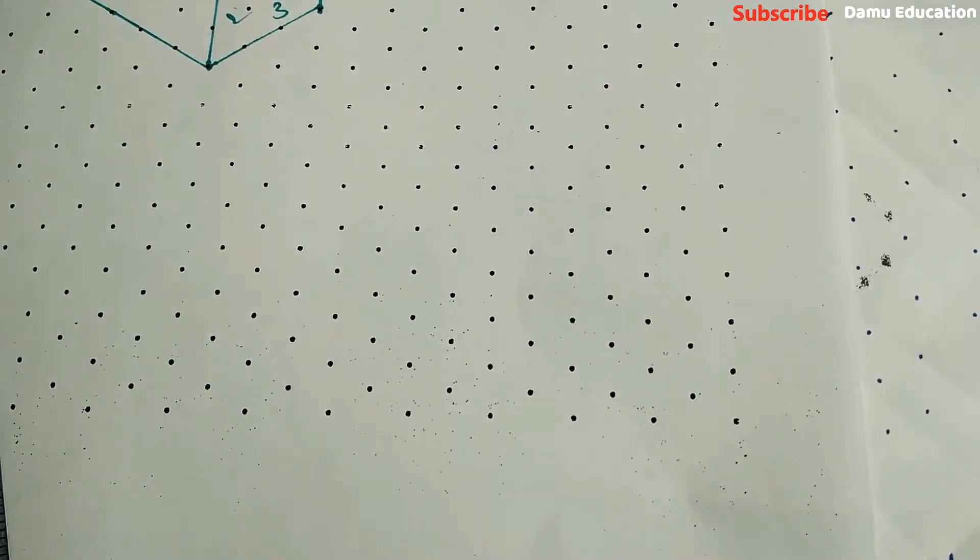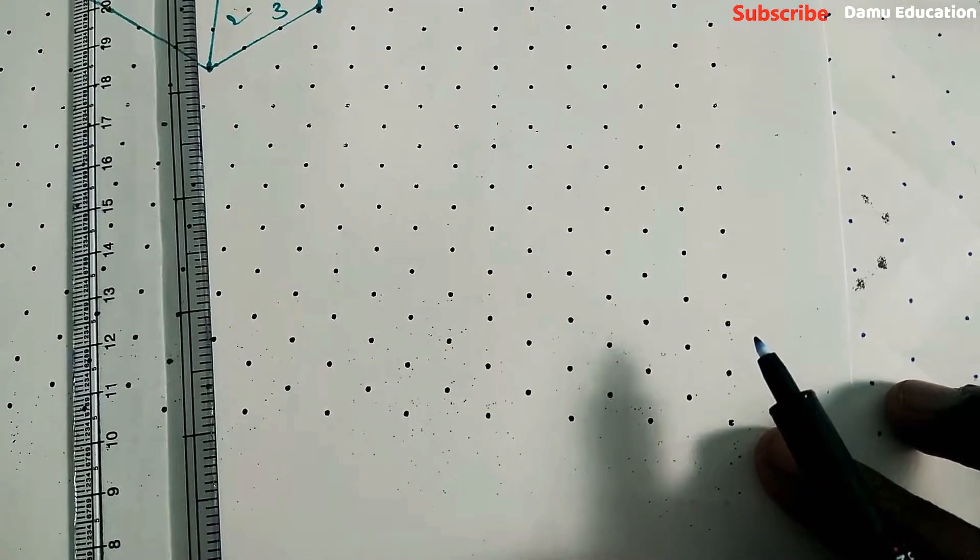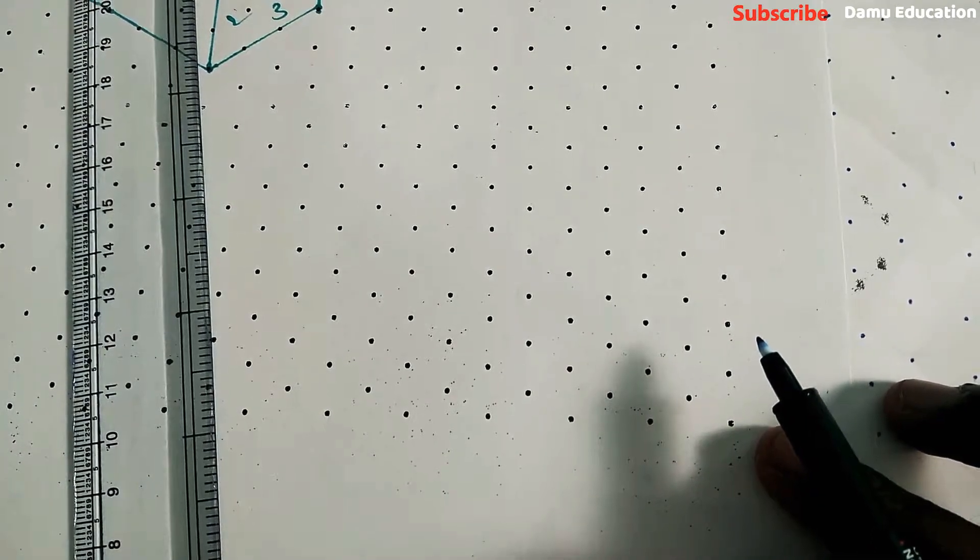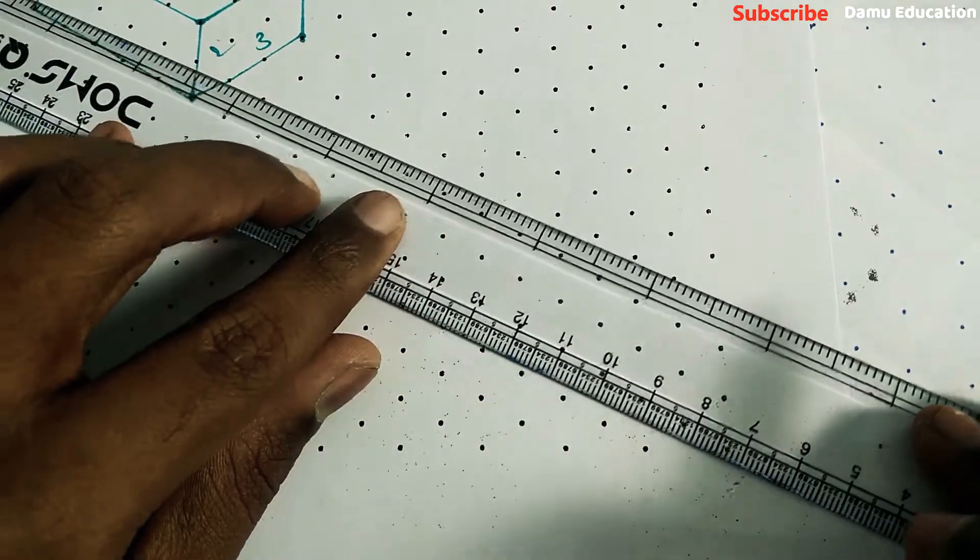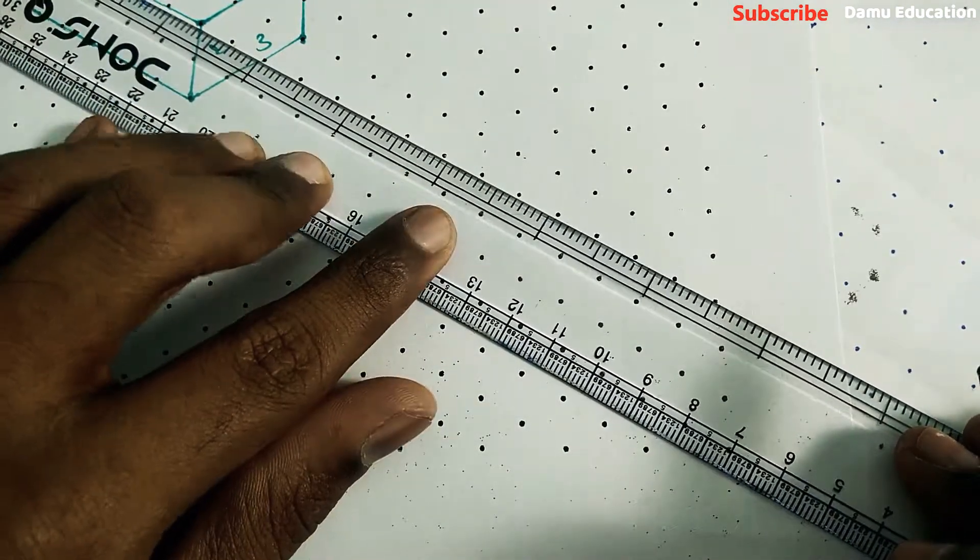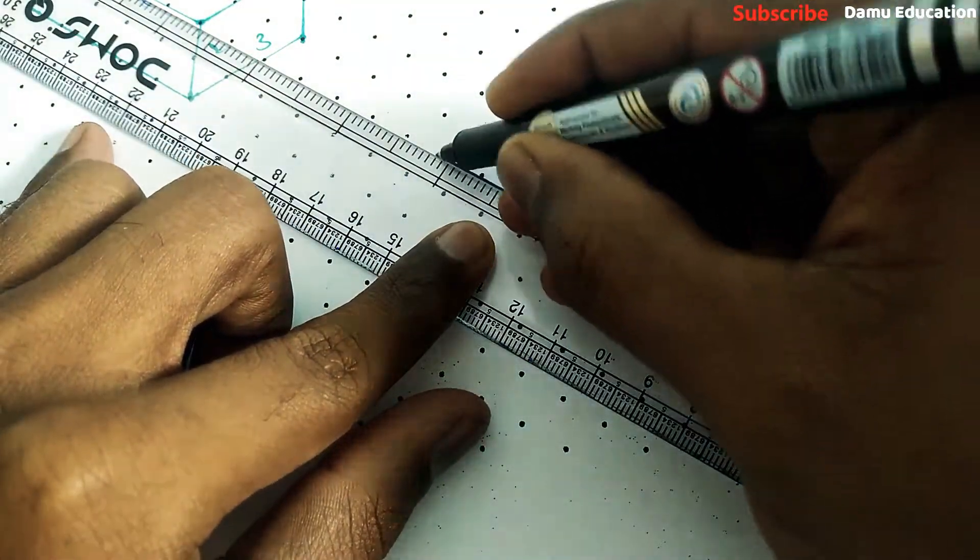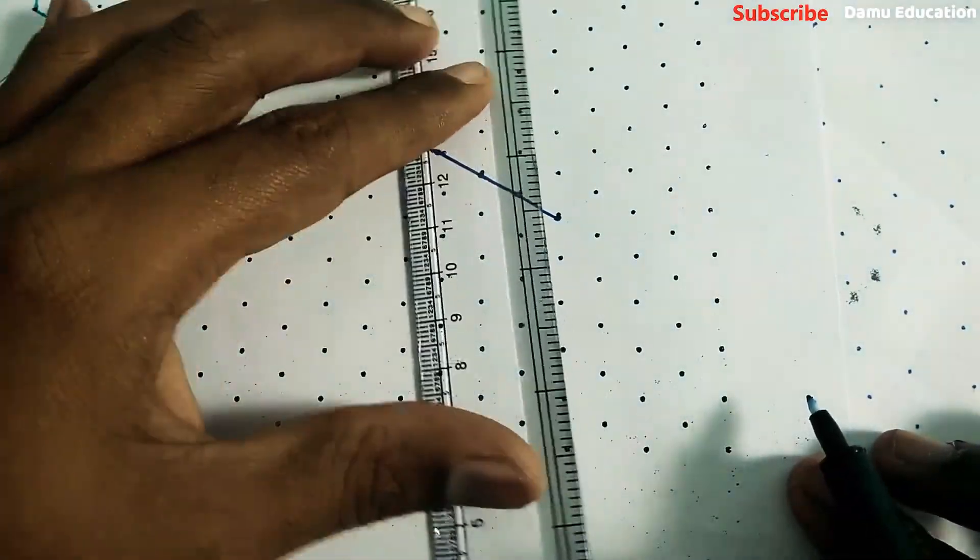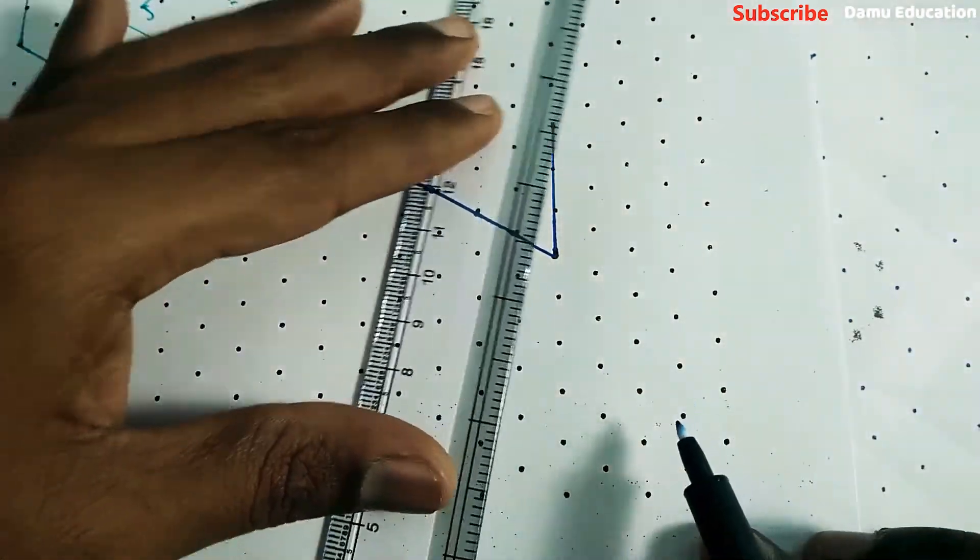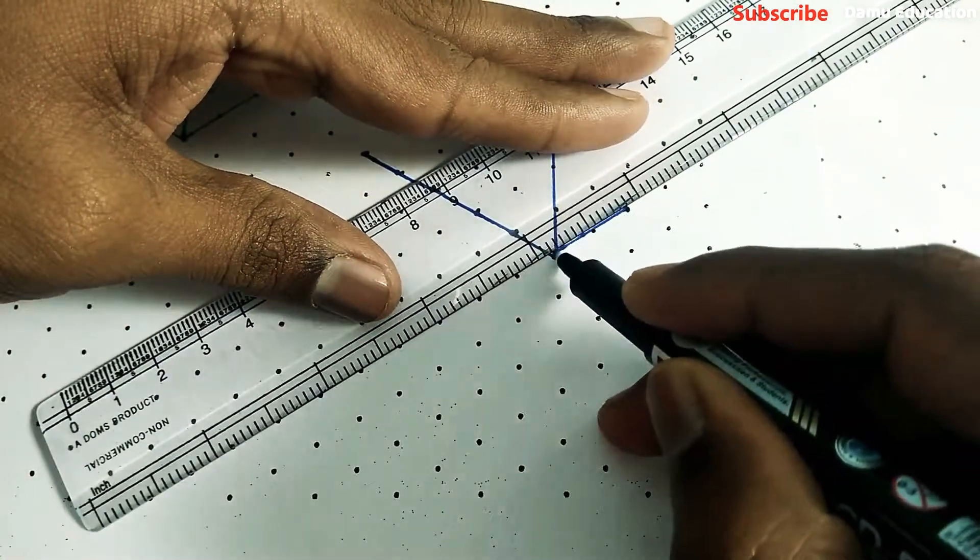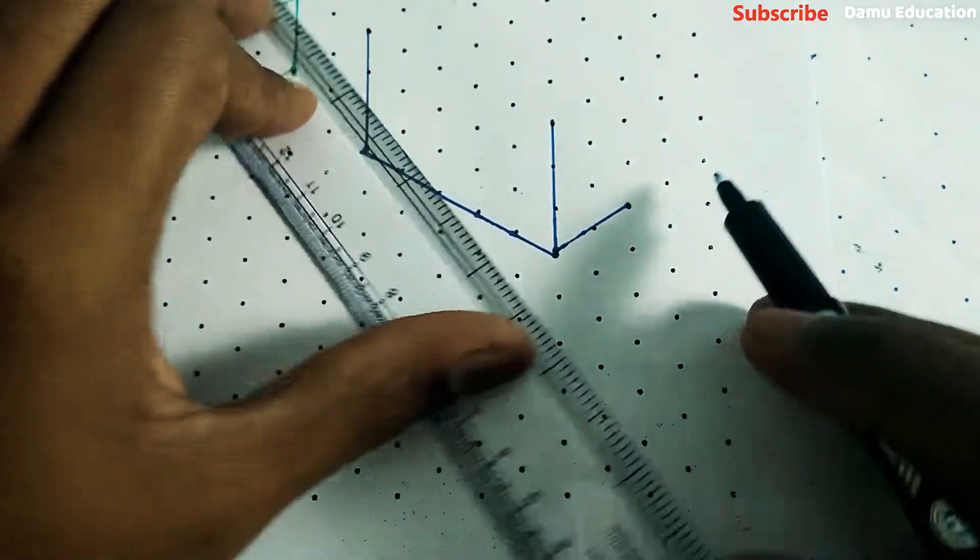Now we'll draw the cuboid with dimensions 5 cm, 3 cm, and 2 cm in isometric manner. So 1, 2, 3, 4, 5. Then height may be, let's take height as 3. Then this side may be 2.